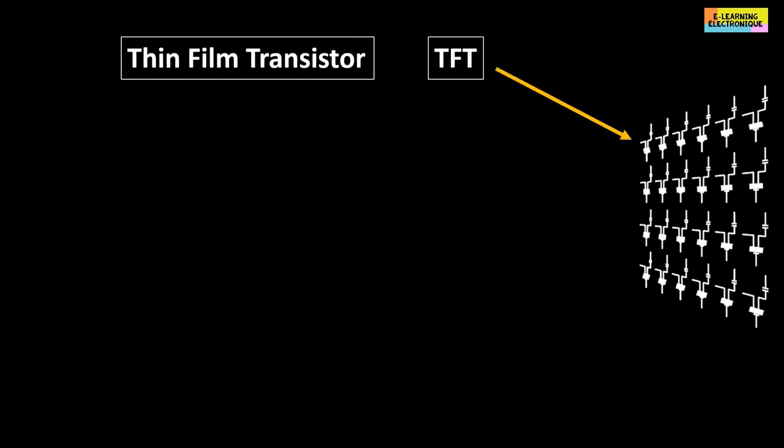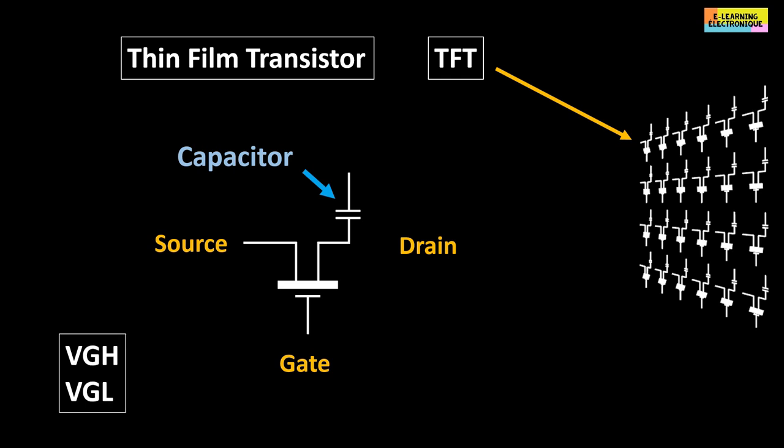To control each pixel individually, the screen incorporates specific transistors known as TFT, which is the acronym for thin film transistor. Their schematic representation is as for a MOSFET. The sub-pixel also includes a capacitor. The VGH and VGL control this TFT through the gate.